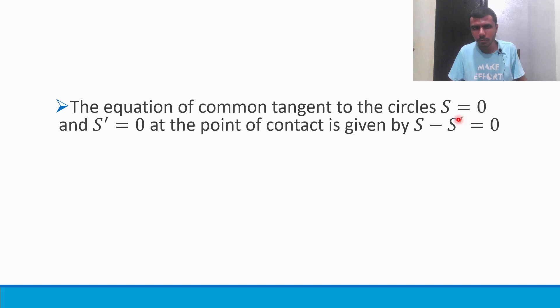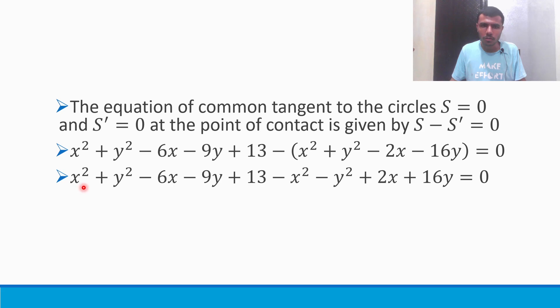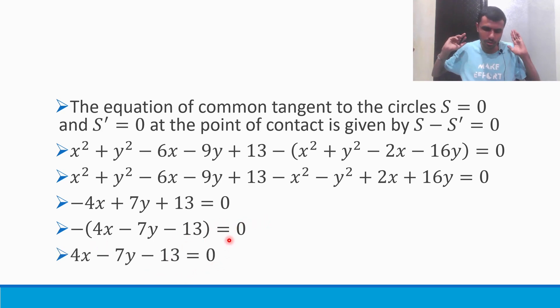Now we need to accomplish one more thing. The third thing is equation of common tangent. How to get that? It's pretty simple guys. Equation of common tangent is given by S minus S dash equal to 0. What is this? This first circle and S dash is this. Just write the circle part. Just expand this minus x square minus y square plus 2x plus 16y equal to 0. X square x square cancel. Y square y square cancel. Minus 6x plus 2x is minus 4x. And minus 9y plus 16y is 7y plus 13 equal to 0. Take minus common, send the minus to the RHS. 4x minus 7y minus 13 is equal to 0. Done. Finished.